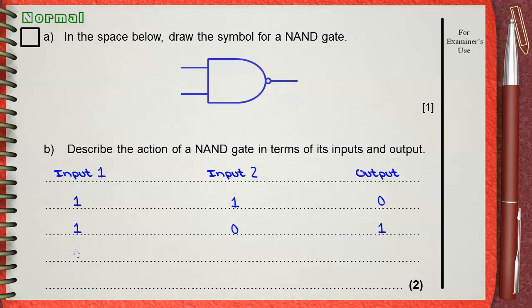The third case: if input 1 is 0 and input 2 is 1. If it was an AND gate, this would give a 0 output. But because this is NAND, not AND, the output will be the opposite. The output will be 1.